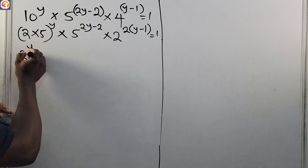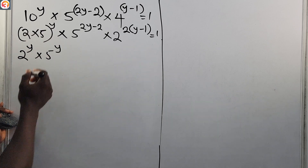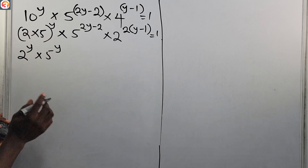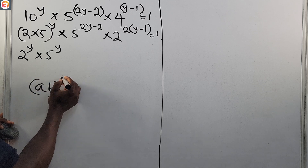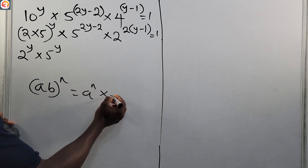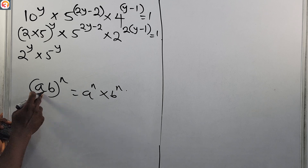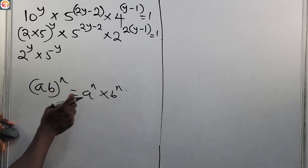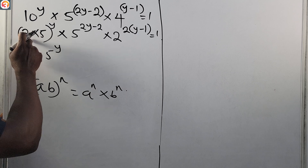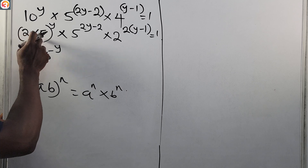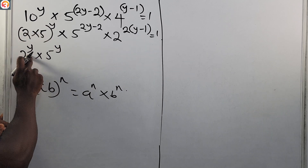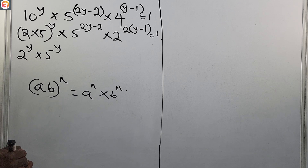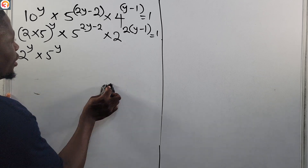Now we proceed. 2 times 5, all raised to power y, is the same as 2 raised to power y times 5 raised to power y, because this matches the rule we just gave: (ab) raised to power n equals a raised to power n times b raised to power n. Since 2 and 5 are different and multiply to 10, 10 raised to power y equals 2 raised to power y times 5 raised to power y.